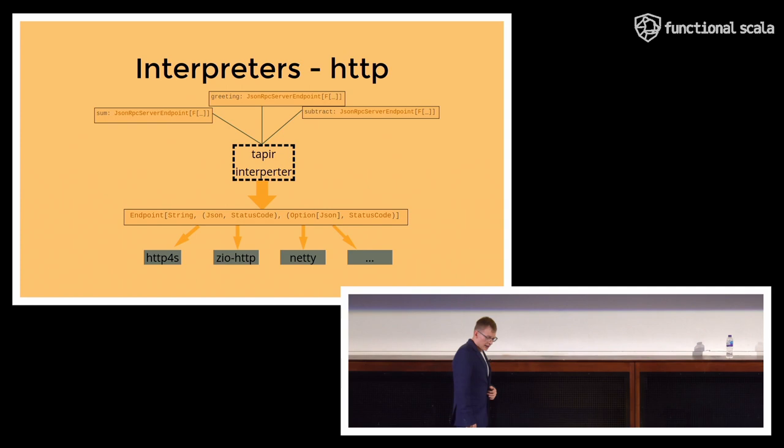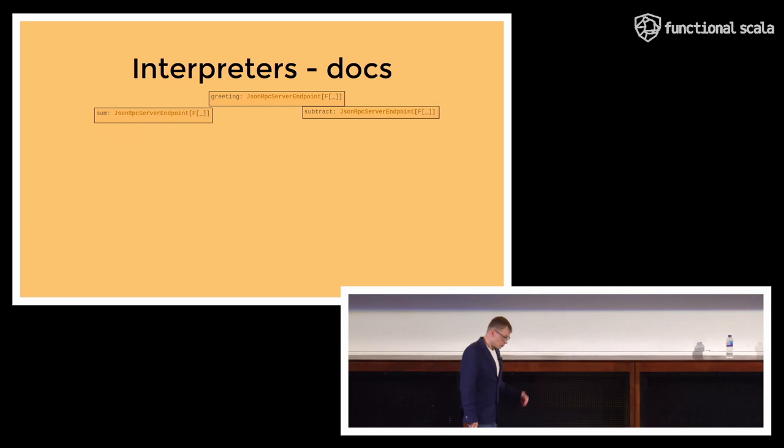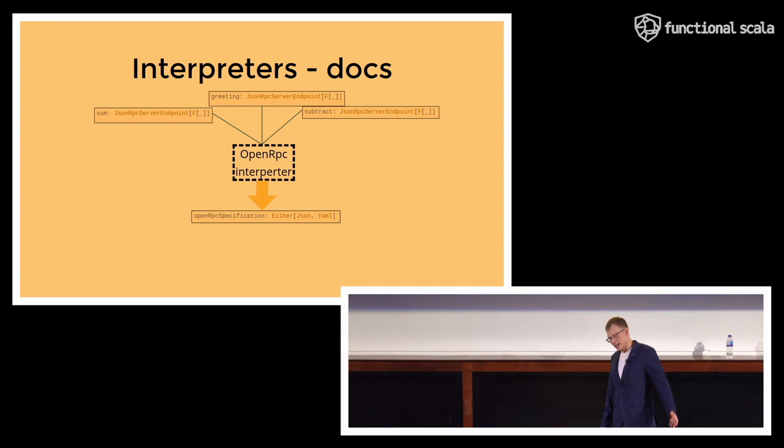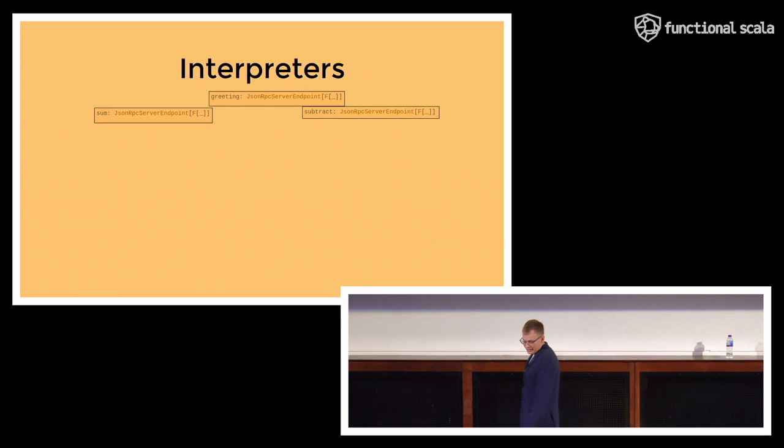And under the hood, this endpoint will have following type signature. Because it needs to be generic enough to support all the JSON-RPC protocol. What else can we do? Well, obviously, we can generate documentation because that was the whole point of doing this project, right? So we can use OpenRPC interpreter to obtain this OpenRPC specification, either as a JSON or YAML. And we can then feed it into OpenRPC Playground, which is something similar to Swagger Live Editor that allows you to interactively explore your API through a nice web interface.